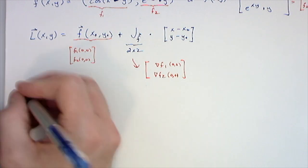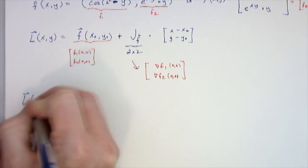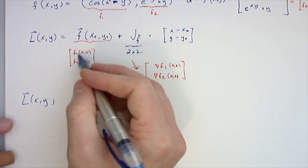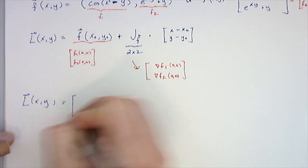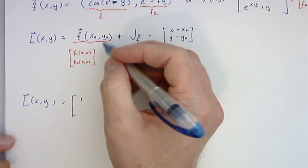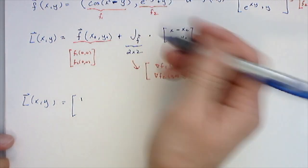In this particular example, the linearization: f at (0,0) is cosine of 0 minus 0, so cosine of 0 is 1. And f2 of (0,0) also happens to be... I was going to make this a minus sign, let's make that a minus sign just to make it a little more interesting.